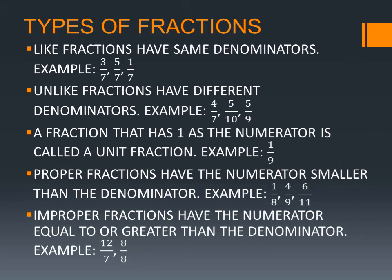Improper fractions have the numerator equal to or greater than the denominator. For example, 12 by 7 and 8 by 8. In 12 by 7, numerator 12 is greater than the denominator 7, so it is an improper fraction. In 8 by 8, the numerator is equal to the denominator.